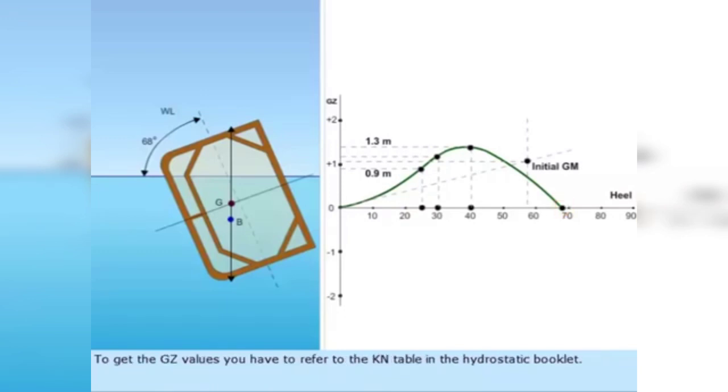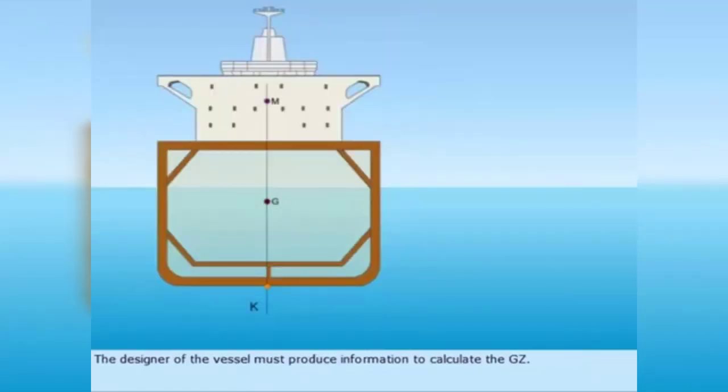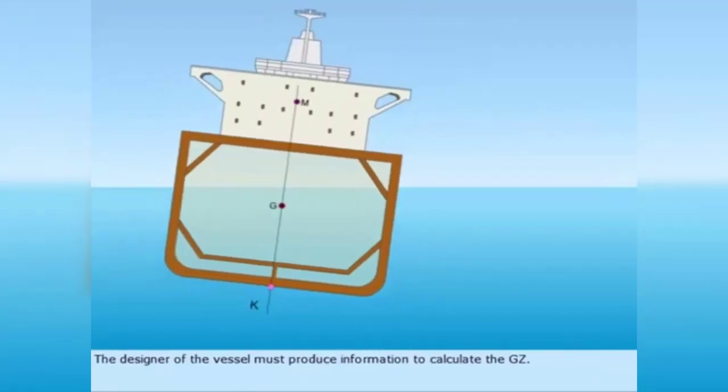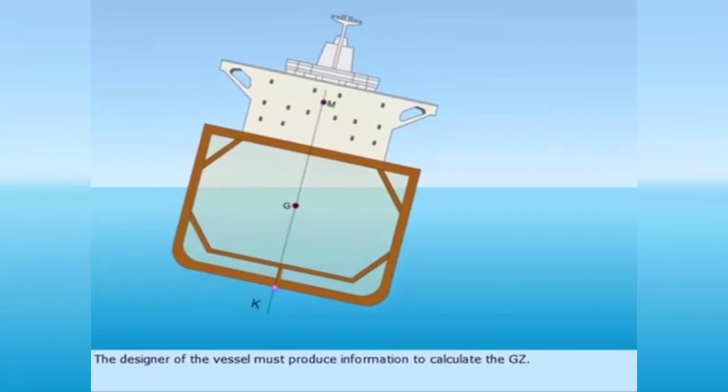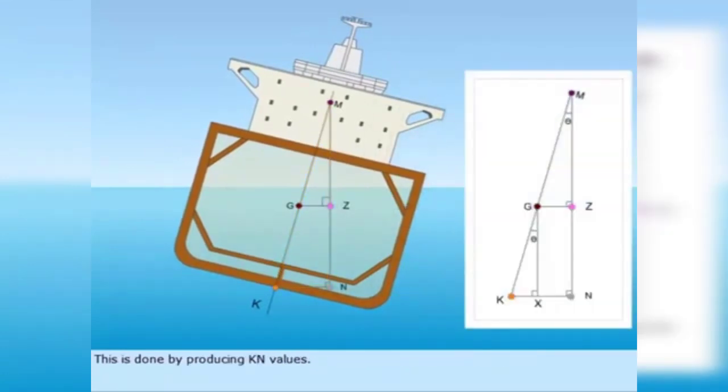To get the GZ values, you have to refer to the KN table in the hydrostatic booklet. The designer of the vessel must produce information to calculate the GZ. This is done by producing KN values.